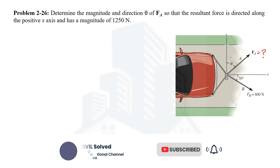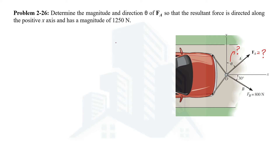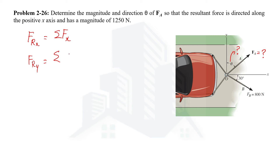The magnitude and angle of FA are both required. This problem is to be solved using the method called composition of forces. In this method, the resultant is calculated by summing the horizontal and vertical components first, then determining the magnitude. In this case the resultant is directly given along with its direction, but the magnitude and direction of one of the forces is required. So the x-component of the resultant force, FRx, equals the summation of horizontal components — FAx and FBx — and the y-component of the resultant equals the summation of forces acting in the y-direction.